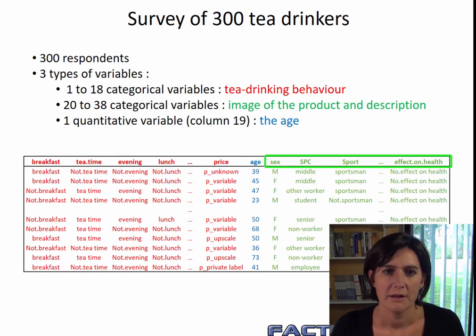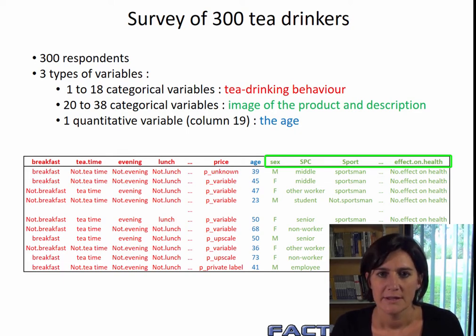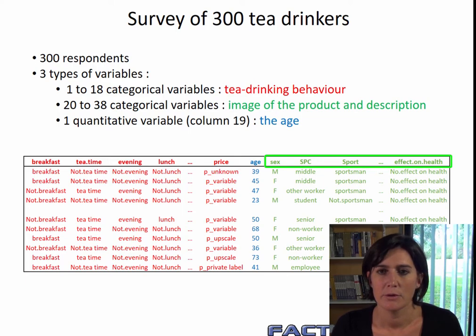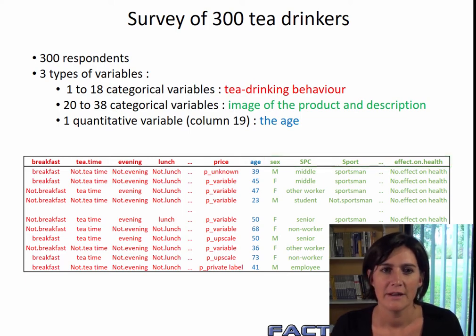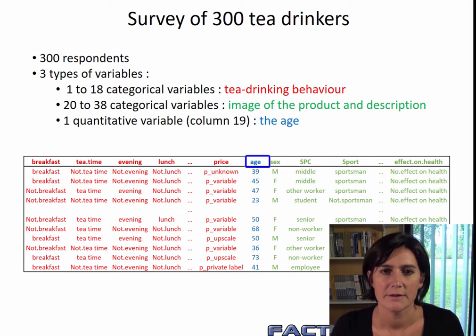As for their image of tea, there were questions like: is tea good for health? Is it a diuretic? And so on. Then one last quantitative variable, actual age. That's the 19th column in the dataset.